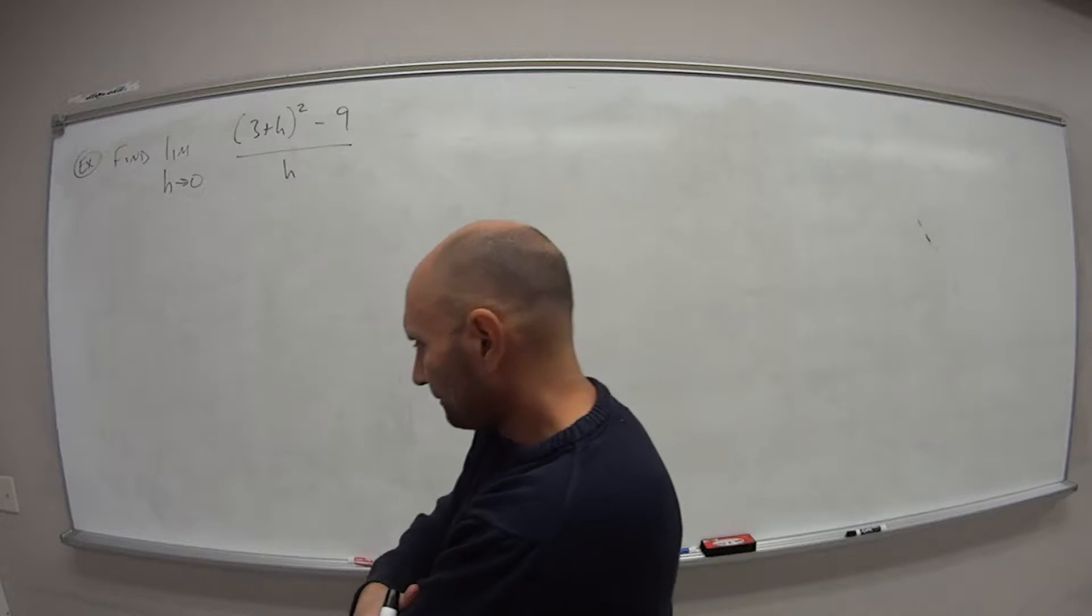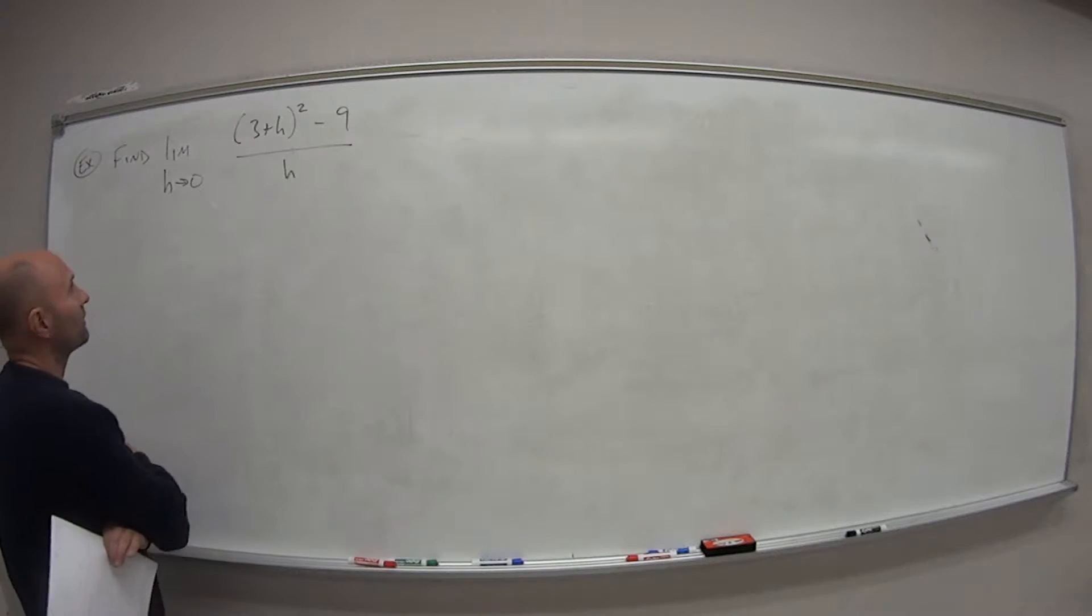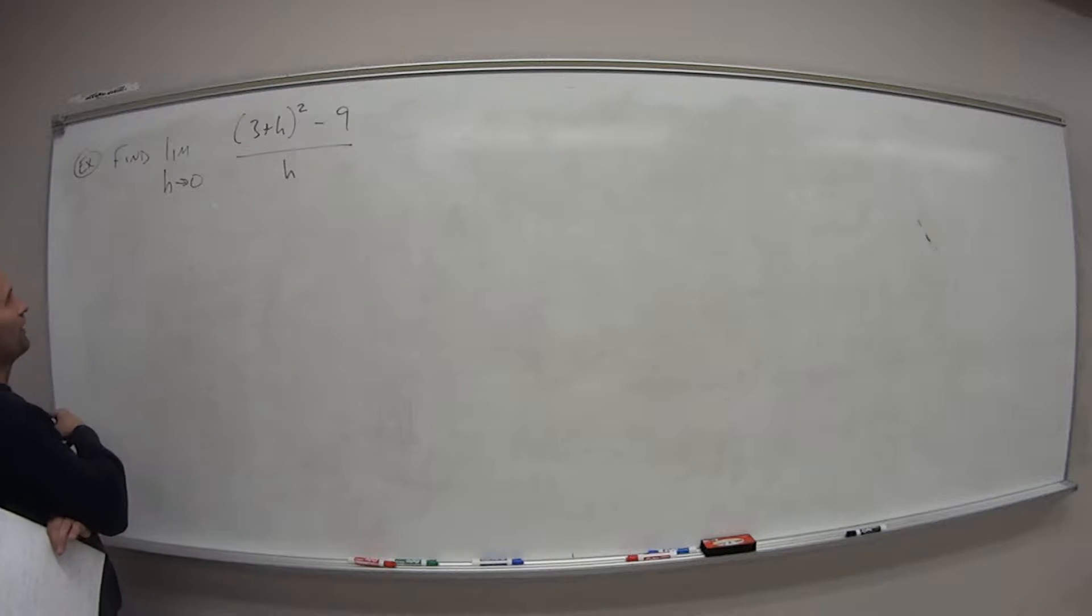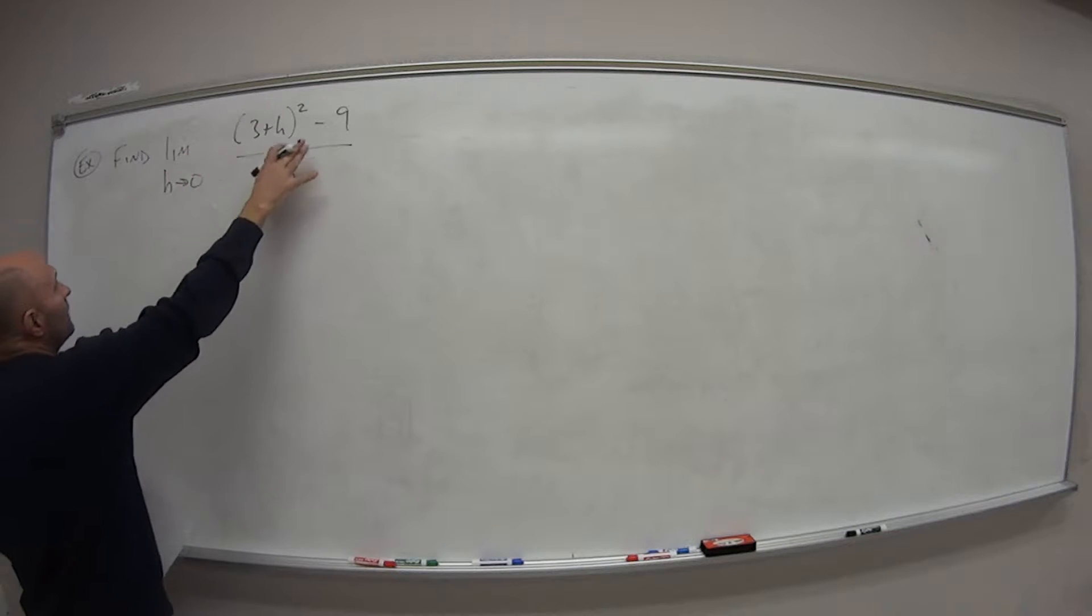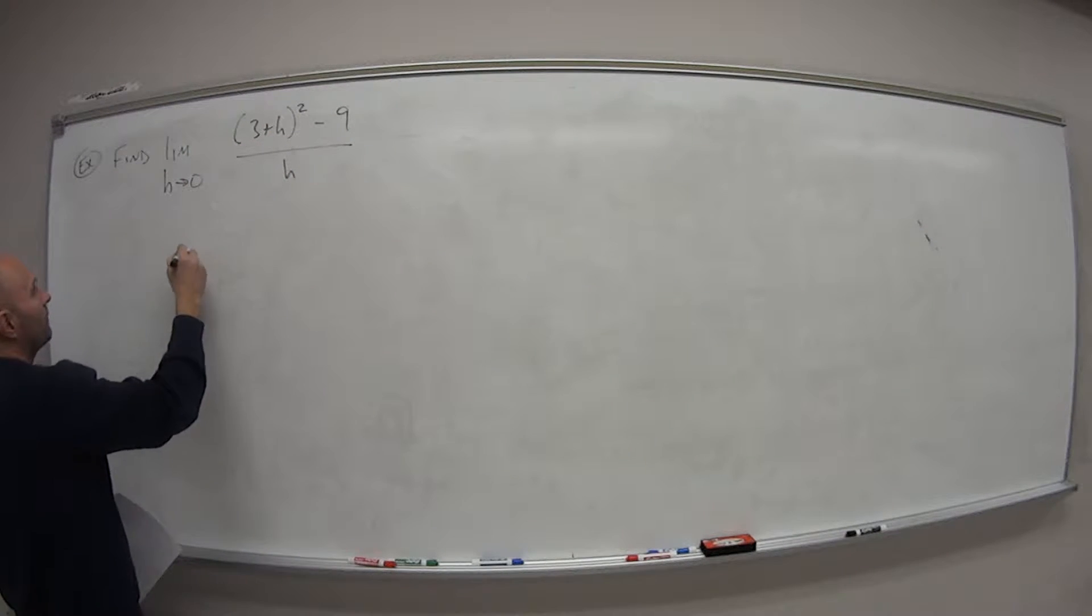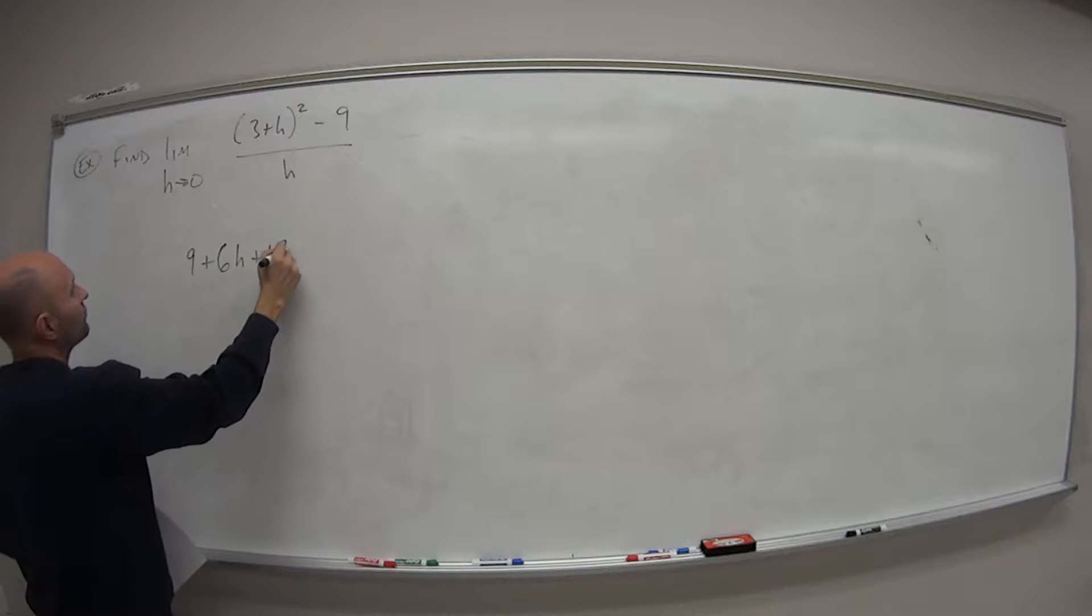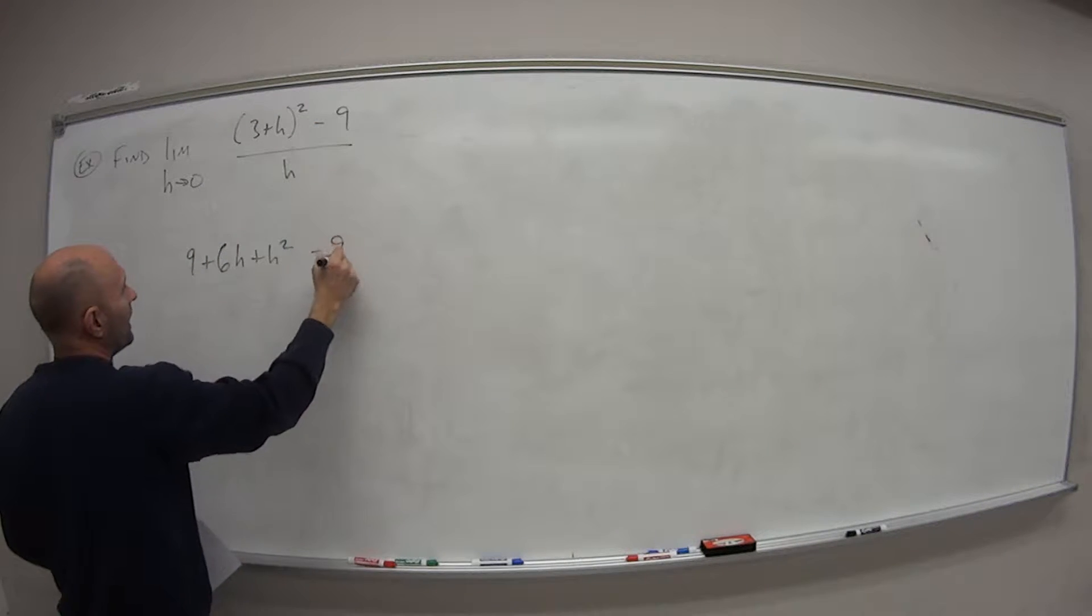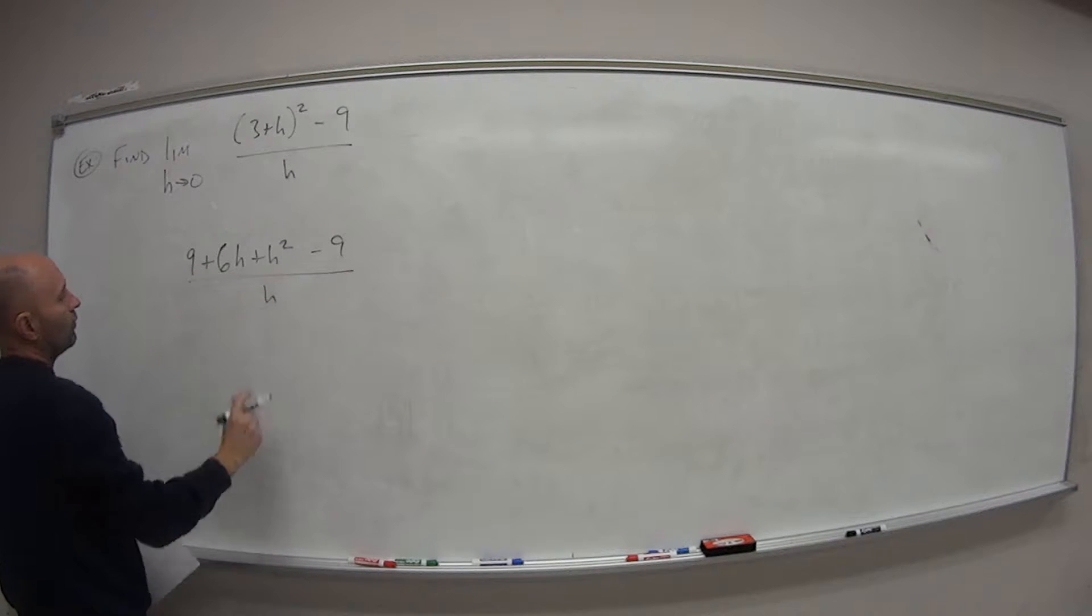All right, welcome back. I'll go through this a little bit quickly. Again, just to save you a little bit of time and hopefully you already did the work. So it's more just checking your answer. But for this top part here, if we foil it out, we get what? We get 9 plus 6h plus h squared and then minus 9 here all over h.